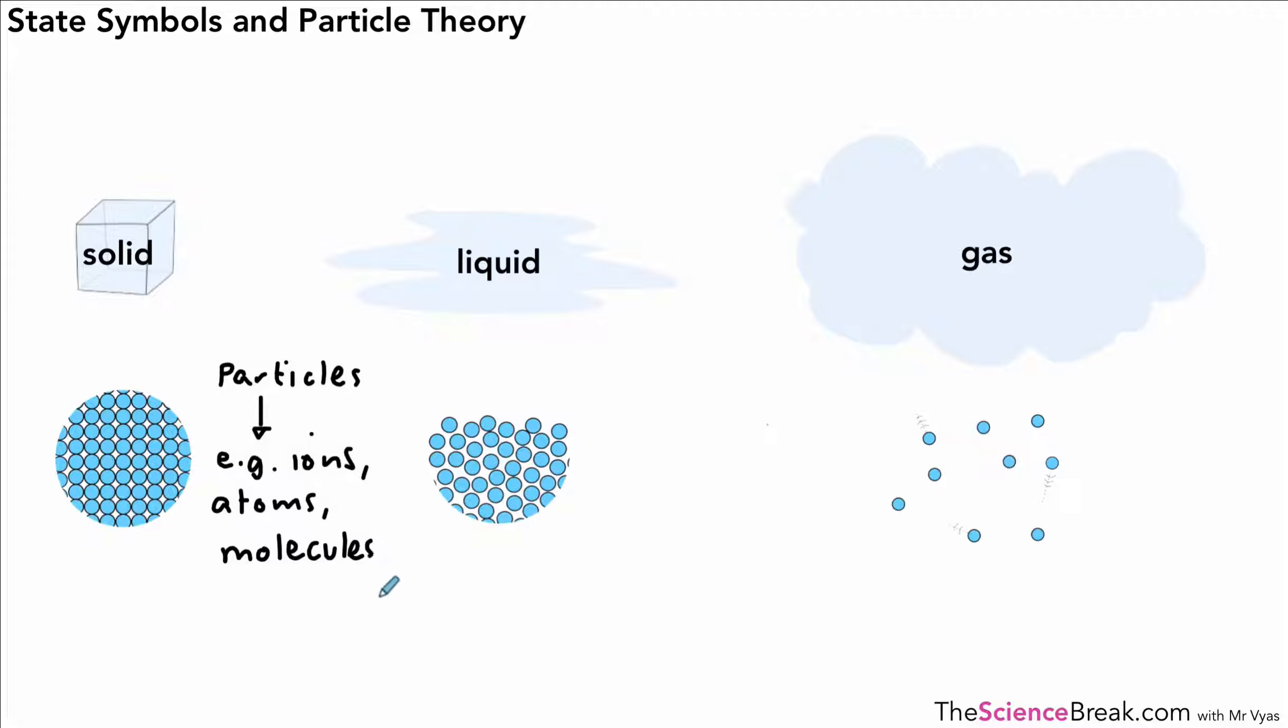When we're talking about solids, we say that the particles are arranged in rows and columns, or sometimes in a lattice structure. They are very close together and they vibrate about fixed positions.